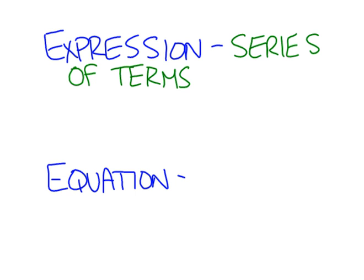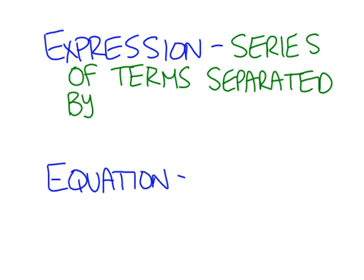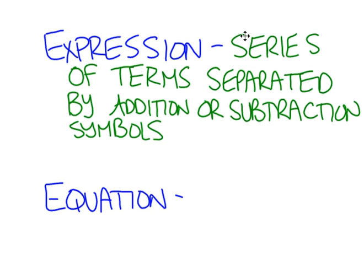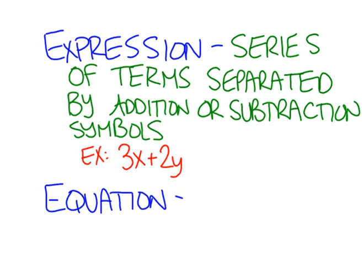Each of the terms can be separated by some sort of operation, and usually your operation will be addition or subtraction. So an example of an expression might be something like 3x plus 2y, or 5x plus 1, or you could group them together and do 3x plus 2y minus 5x plus 1. So each of those individual pieces would be a term, and together they would be an expression.